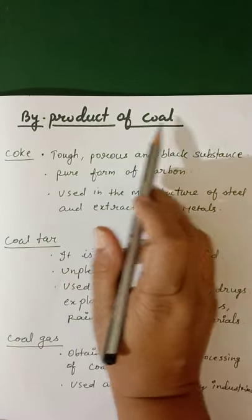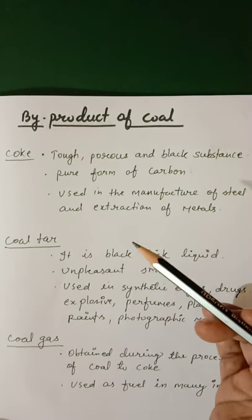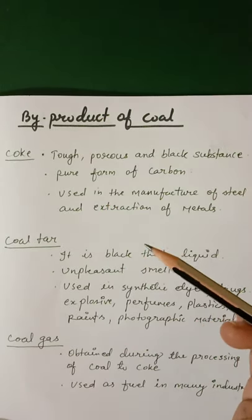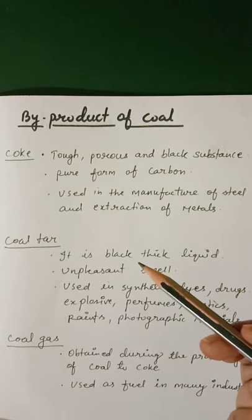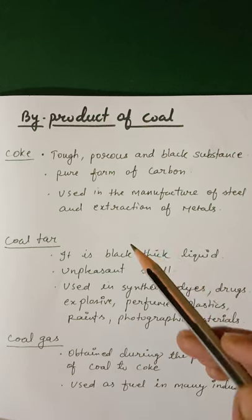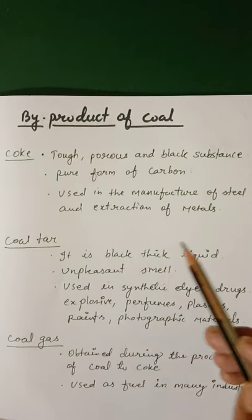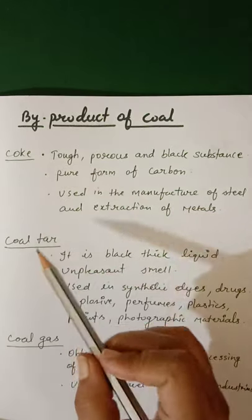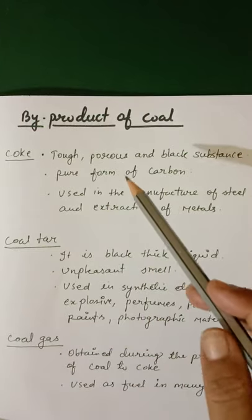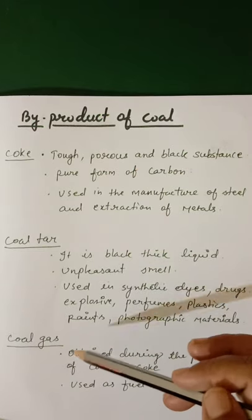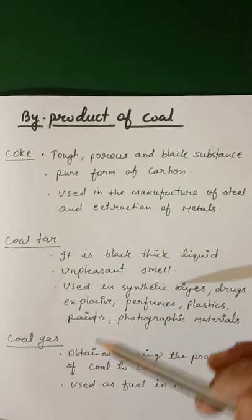By-products of coal. When coal is heated at a high temperature — that is 1000 degrees centigrade — in the absence of air, it does not burn. But it breaks down into simpler useful products such as coke, coal tar and coal gas. This process is called destructive distillation, which is carried out in a laboratory.